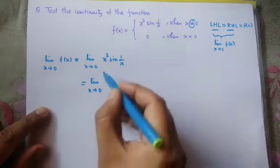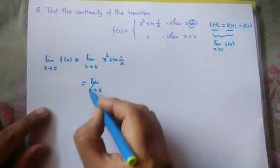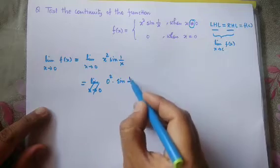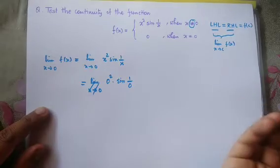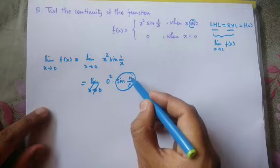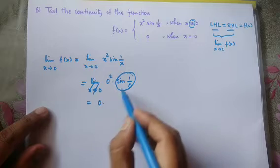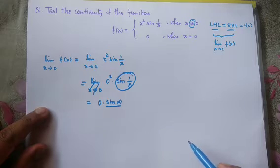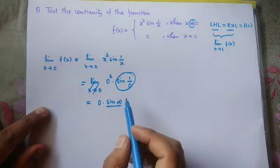Now let's put back the value of x here. So we have limit x tends to 0. Whenever you are putting the value of x to be 0, you get 0 squared times sin(1/x). Now 0 squared is 0, but what about sin(1/x)? What is 1 by 0? 1 by 0 is infinity. So basically this is 0 squared, which is 0, times sin(infinity).